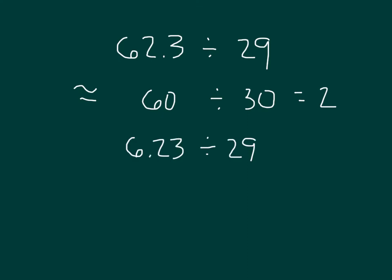Let's compare this to this problem here. We'll notice that the divisors are the same. However, our wholes, or our dividend, what we're dividing, is actually 10 times smaller. Notice that the decimal place actually shifted over one digit. Let's see what happens to our estimated quotient then.